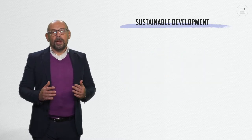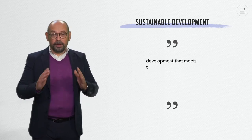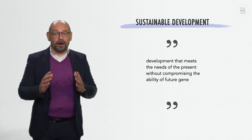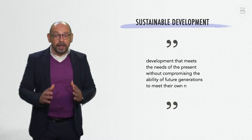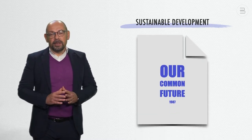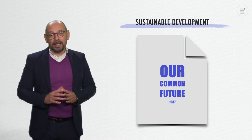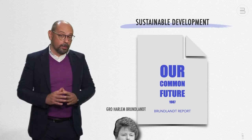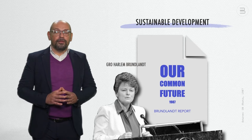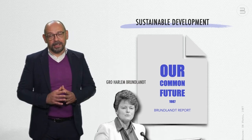Generally, we understand sustainable development as development that meets the needs of the present without compromising the ability of future generations to meet their own needs. This was defined in the famous Our Common Future Report of 1987, otherwise known as the Brundtland Report, after Gro Harlem Brundtland, the former Norwegian Prime Minister in charge of coordinating the report.